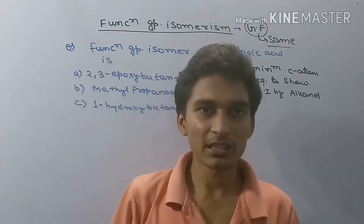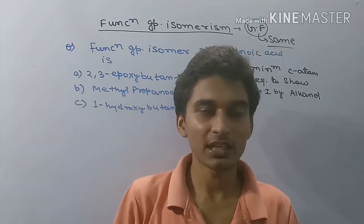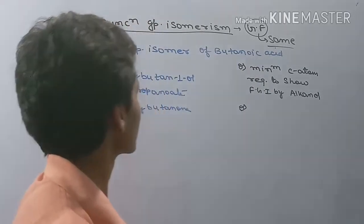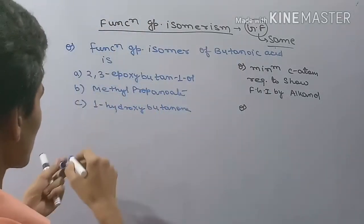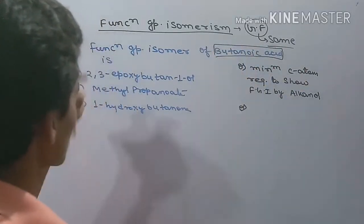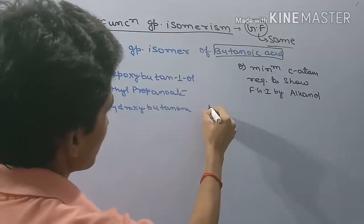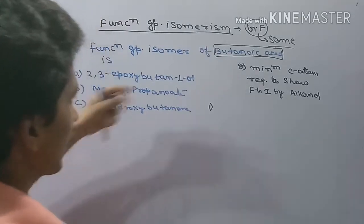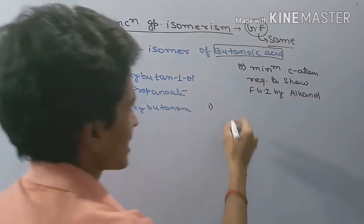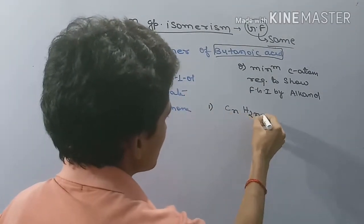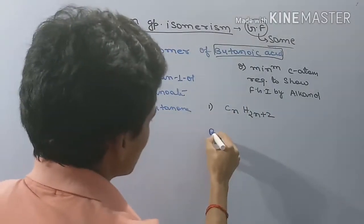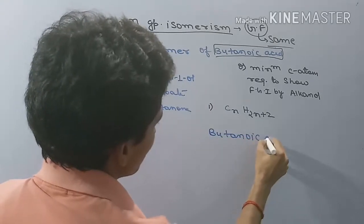Now let me put a question on the case. The general formula we have — let me discuss at the top. The question is: find the functional group isomers of butanoic acid. In this case, we need to find compounds that share the same general formula as butanoic acid.